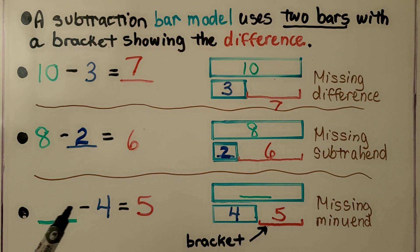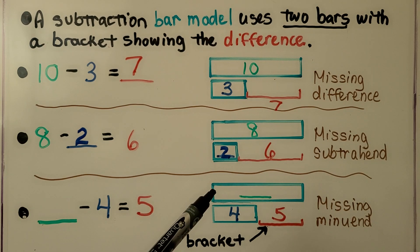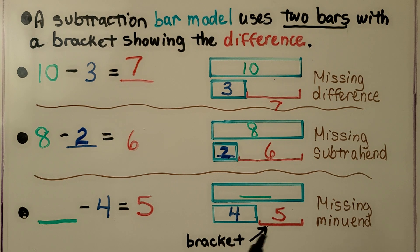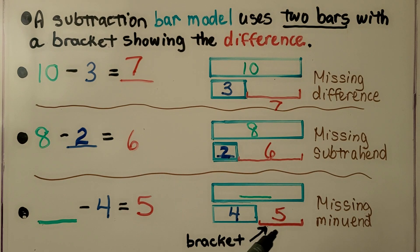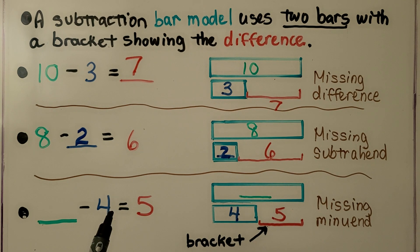Here we have some number minus 4 is equal to 5, so our minuend is missing. We have our subtrahend of 4 and our difference of 5 — sometimes the difference is written below the bracket or above it. We have a missing minuend. We can solve this with the related addition sentence: what is 5 plus 4? If you said 9, you're right. So 9 minus 4 is equal to 5.